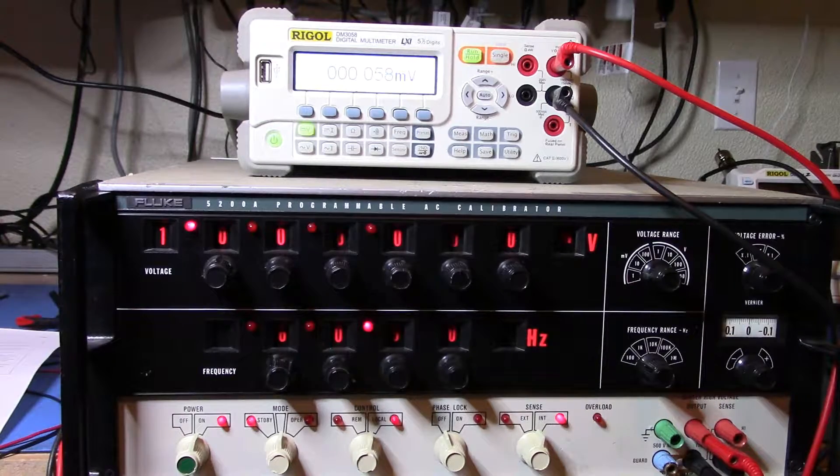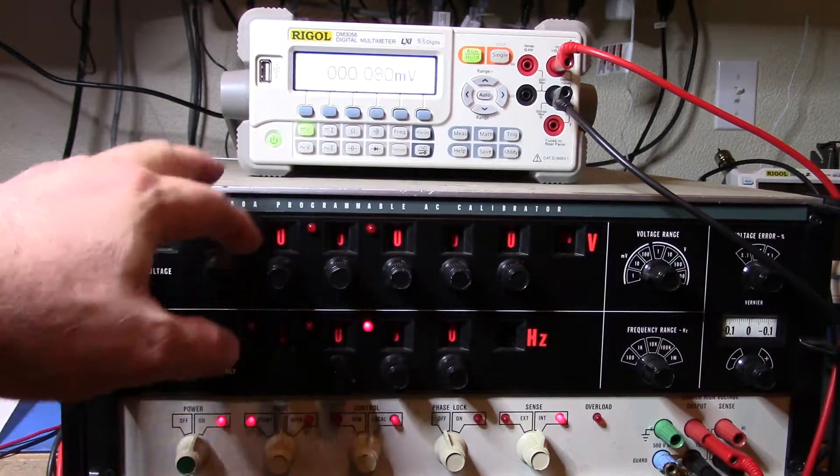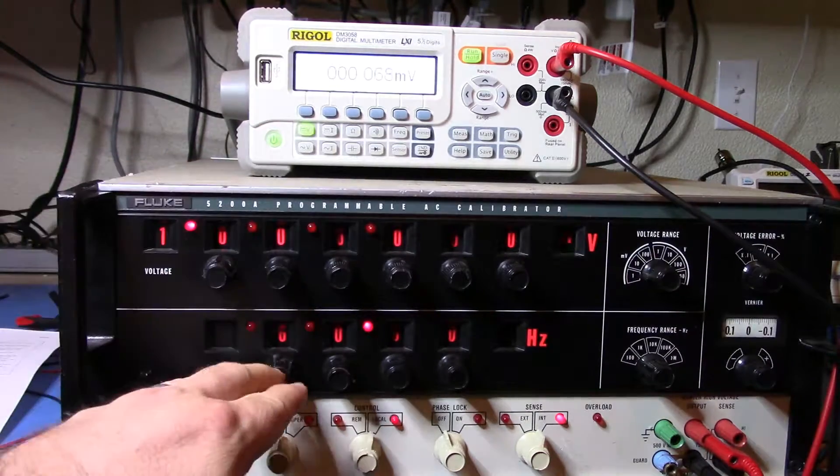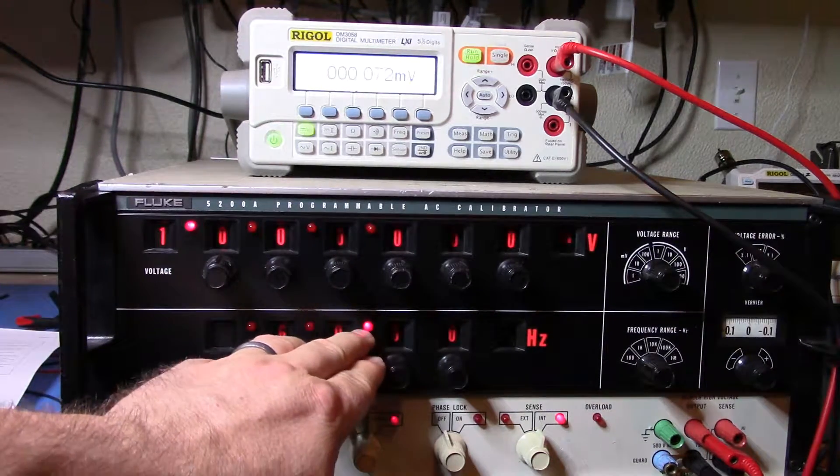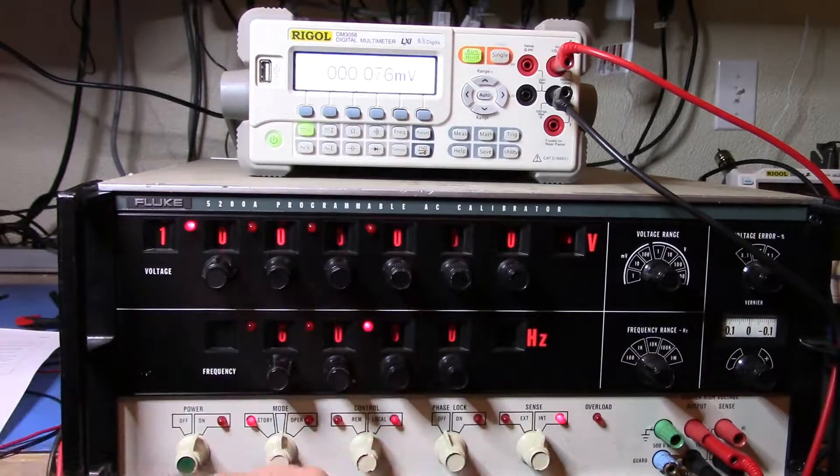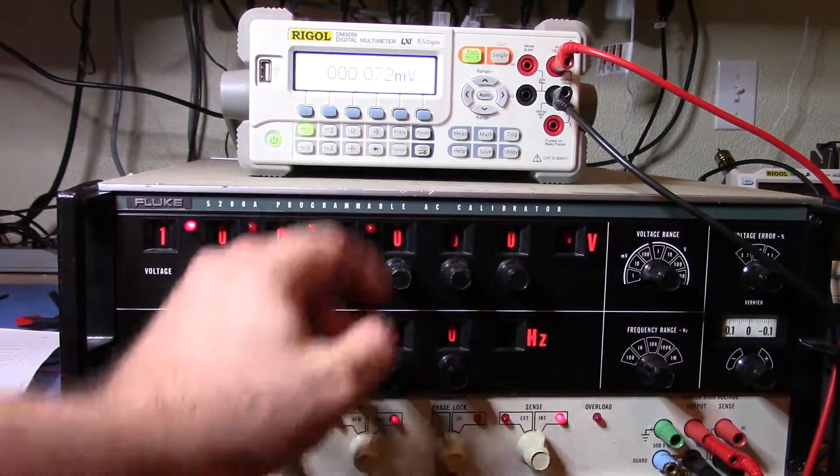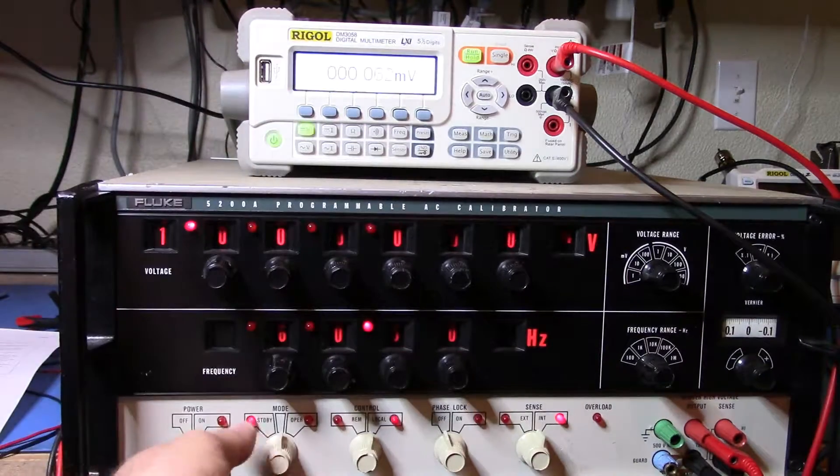They're not like the 5440 being digital. So now that we've got that, let's set it for one volt. We'll set it for 60 Hertz. You can see the 60 Hertz, one volt set here, internal sensing phase lock off. Let's turn it on. And if we look up here, we'll see what we get.